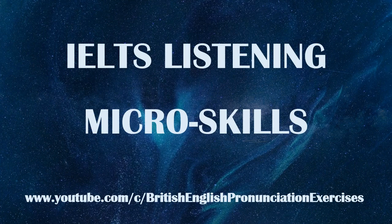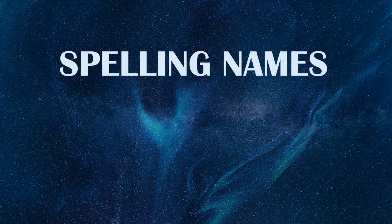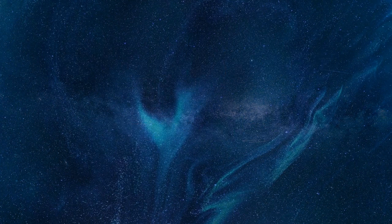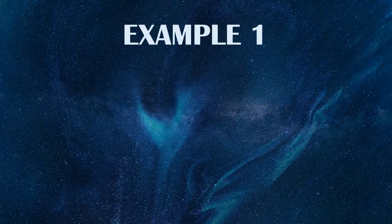Hello and welcome to this episode of the IELTS Listening Microskills series. In this video we're going to practice spelling names, and just to give it a theme, all of the names in today's video will be newsreaders. You're going to need a pen and a piece of paper, and we'll have ten examples in total. All you need to do is write down what you hear and we'll check the answer after each example.